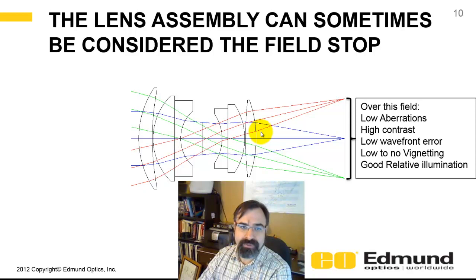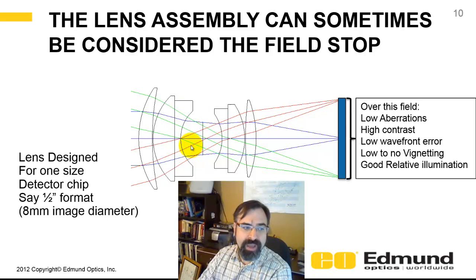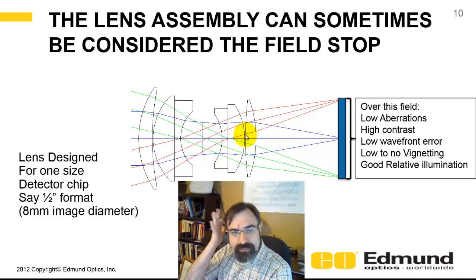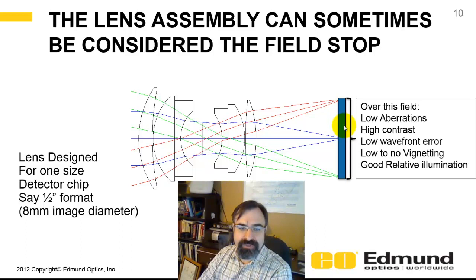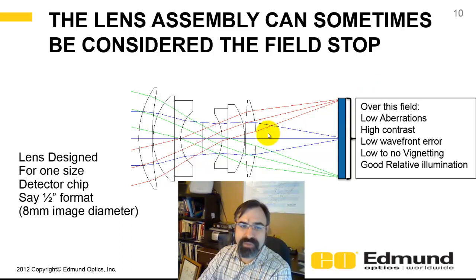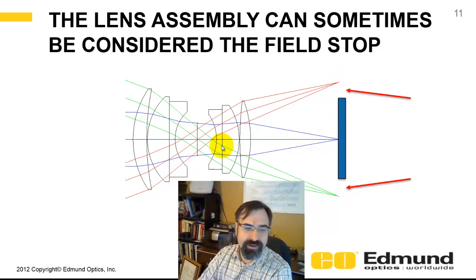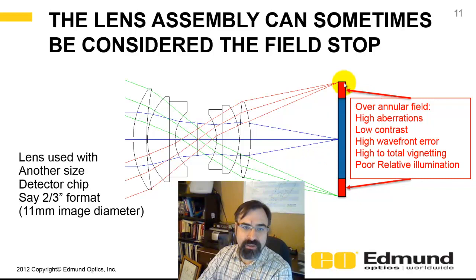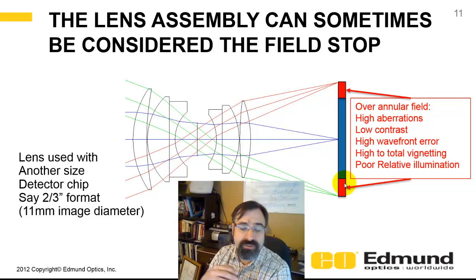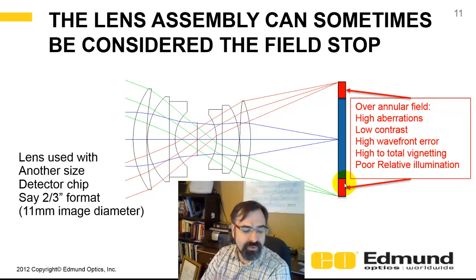Sometimes you've got to consider the optical system itself as your field stop. Suppose this double Gauss is designed for one size detector — say half-inch format, or an 8mm image diameter. Over this field you've got low aberrations, high contrast, little wavefront error, no vignetting, and good illumination. But suppose you match it with a larger detector — say a 2/3-inch format, an 11mm image diameter. Over that outer annular ring you're going to have higher aberrations, lower contrast, and potentially poor illumination. So this is a case where the optics are limiting your field, not necessarily a formal field stop.